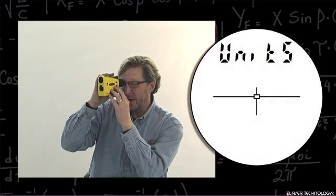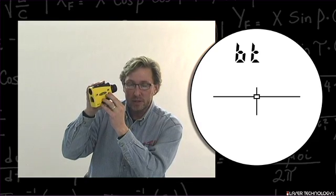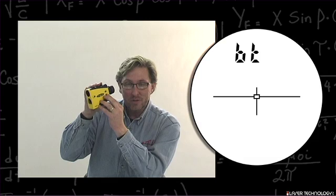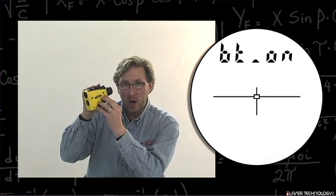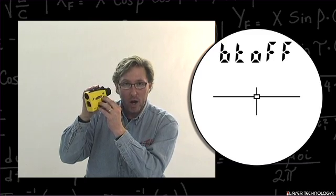When you see Units, hit your down arrow once to see BT on the screen, which stands for Bluetooth. This is where you can turn Bluetooth on or off. If you're not using Bluetooth, turning it off will help extend battery life.